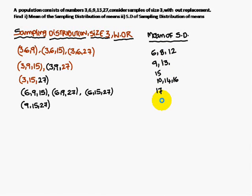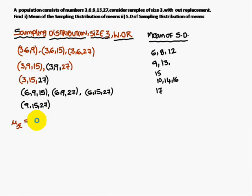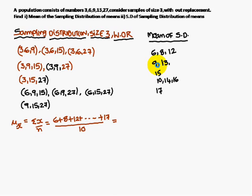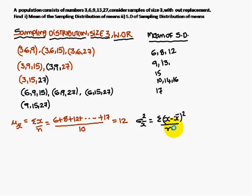These calculated averages form the sampling distribution of means. To find the mean of the sampling distribution, we add all the mean values and divide by 10. So 6 + 8 + 12 + ... + 17, divided by 10, gives us 12.